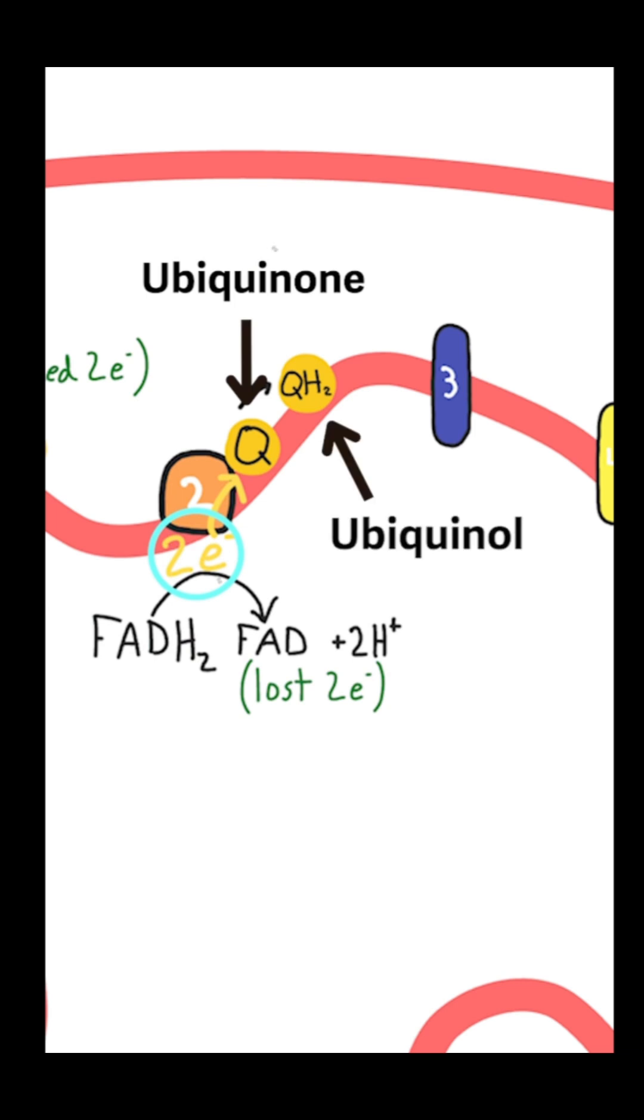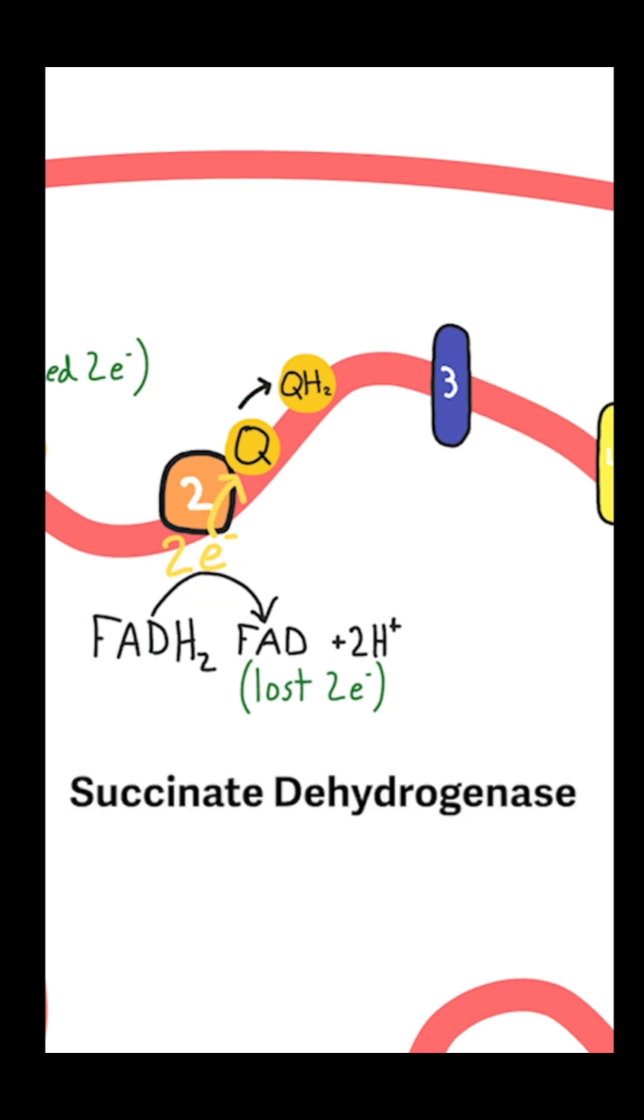If you remember from the Krebs cycle, Complex 2 is also succinate dehydrogenase, so that FADH2 that is produced by succinate dehydrogenase is used to transfer its electrons to coenzyme Q, and Complex 2 does not pump any protons into the inner membrane space.